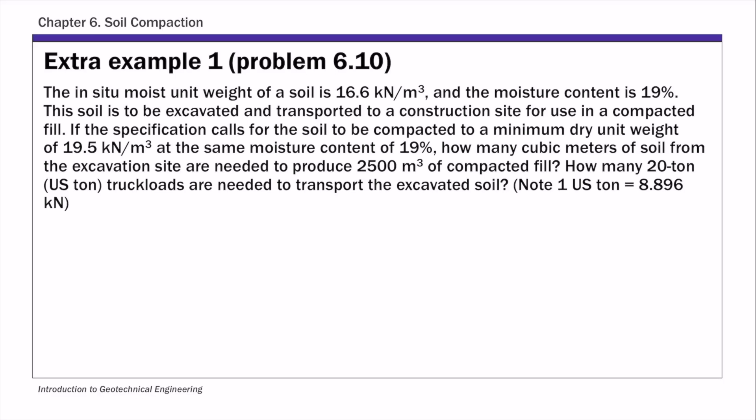This is the extra example one in Chapter 6, Soil Compaction. In this example, we are going to estimate how many cubic meters of soil are needed to produce 2500 cubic meters of compacted fill. For this example, we know the moist unit weight of soil to be used as a compaction fill.